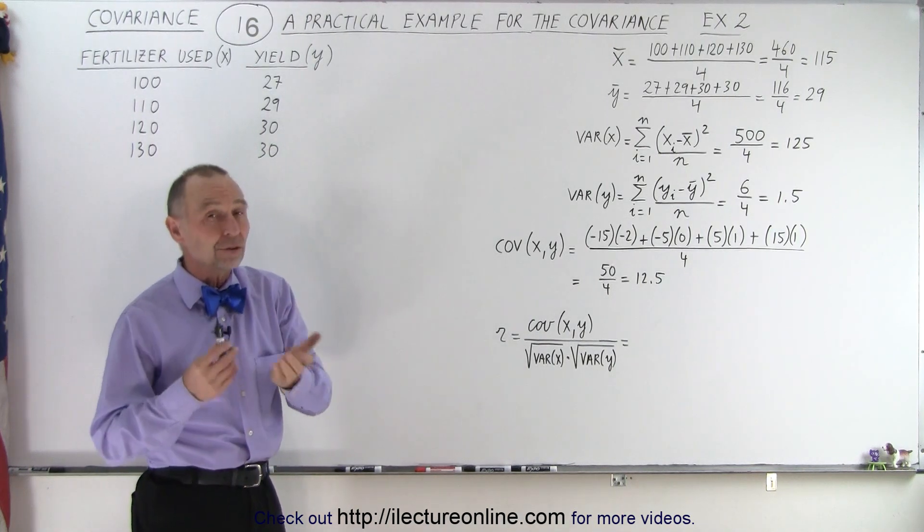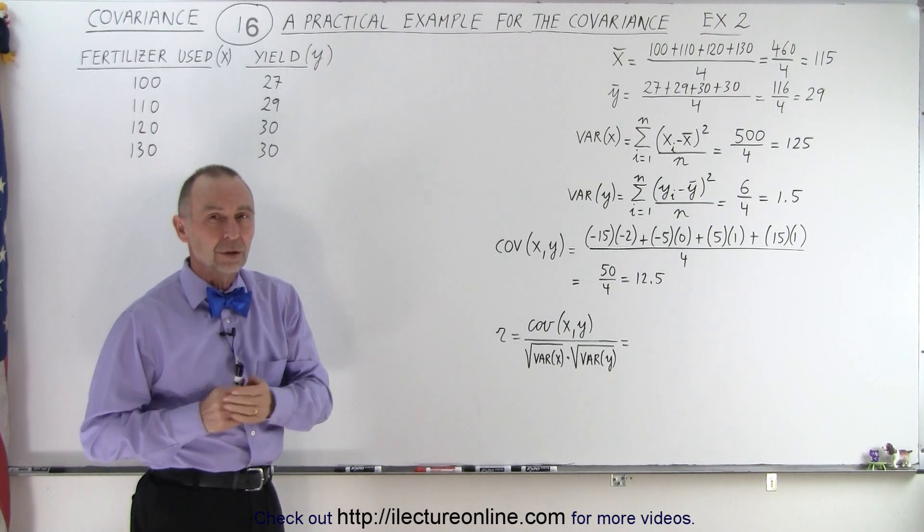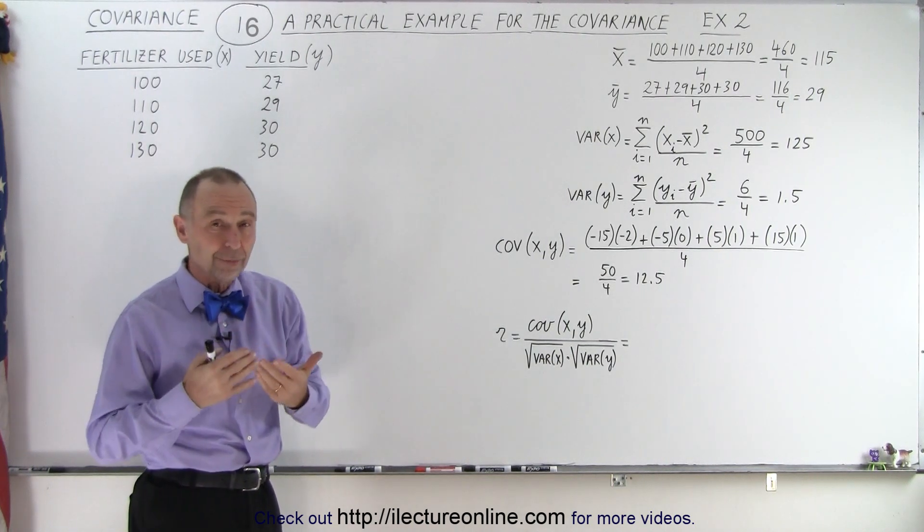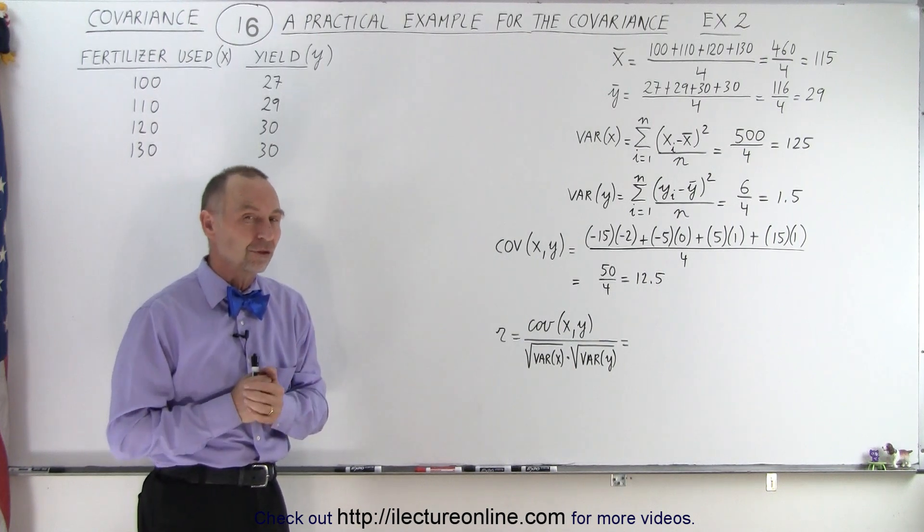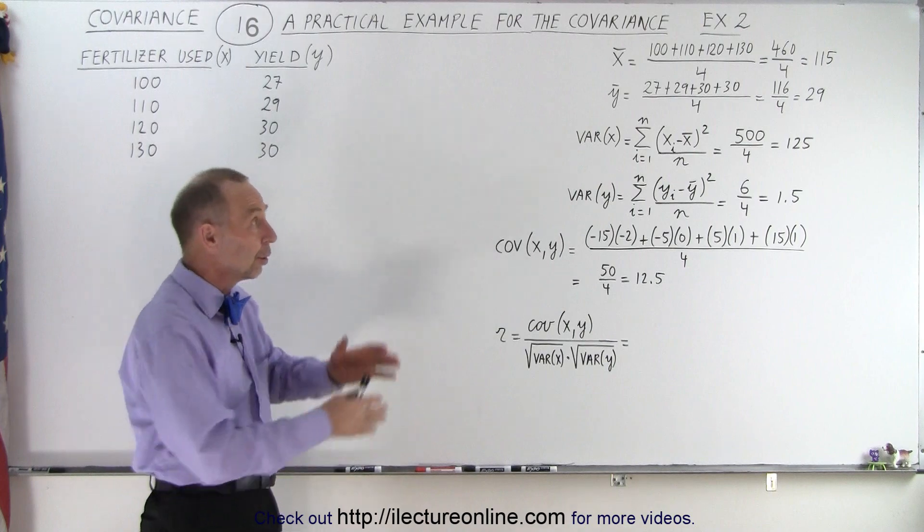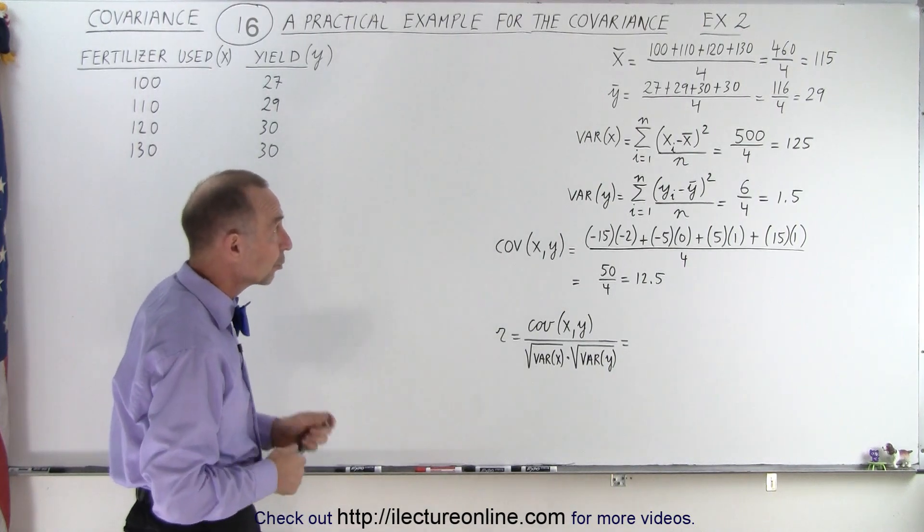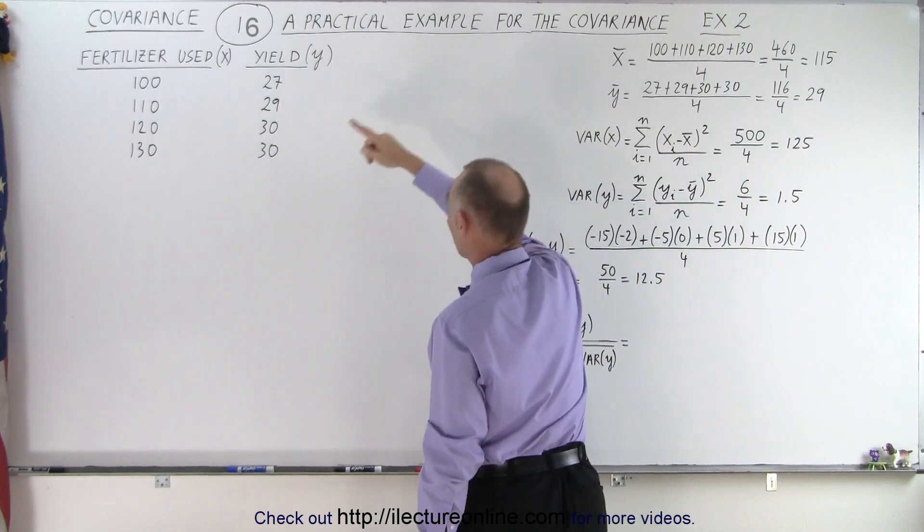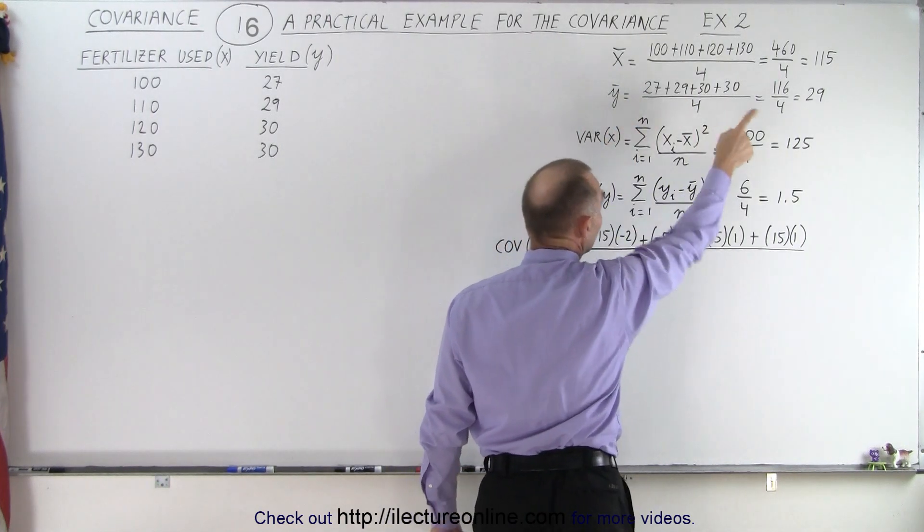Now, what is the covariance going to look like and what is the correlation coefficient going to look like? Maybe we can get some more information out of the covariance matrix as well. So let's take a look. Again, to get a head start, we've already calculated some of the tedious work. We need to find the average in X and the average in Y, the average in the fertilizer used, and the average in the yield.